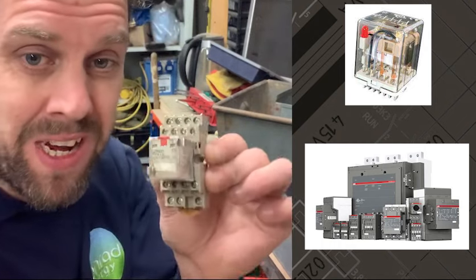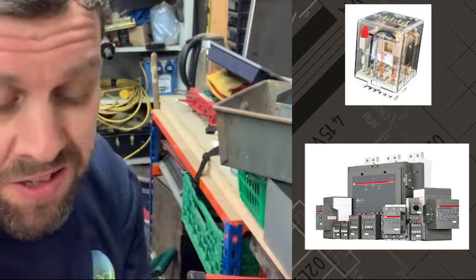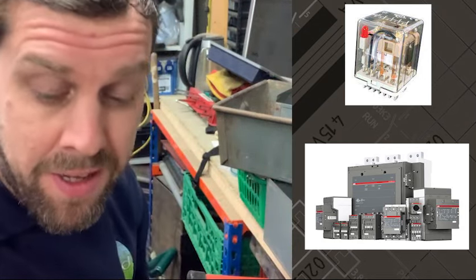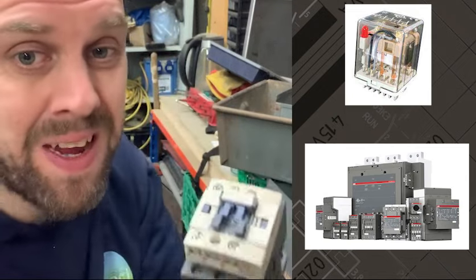One is a relay which can look like this, or it could look like this, or it could look like anything. The other one is contactors which can look like this, but again they can look like anything, but electrically inside the connections do the same thing.